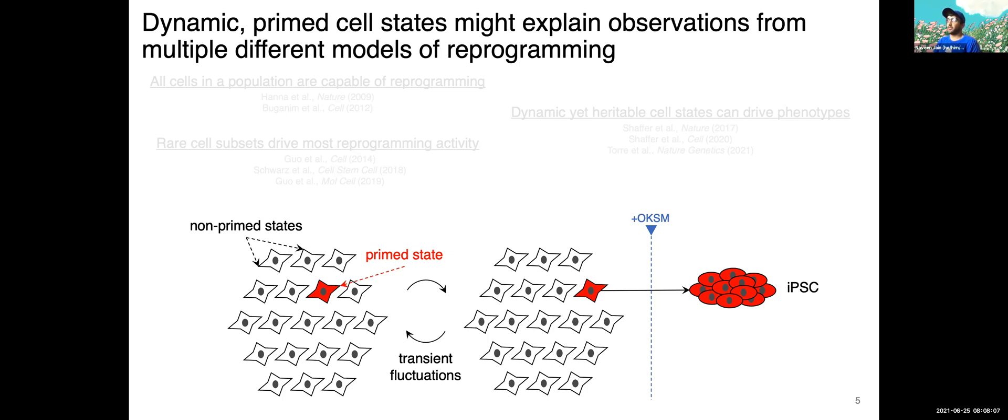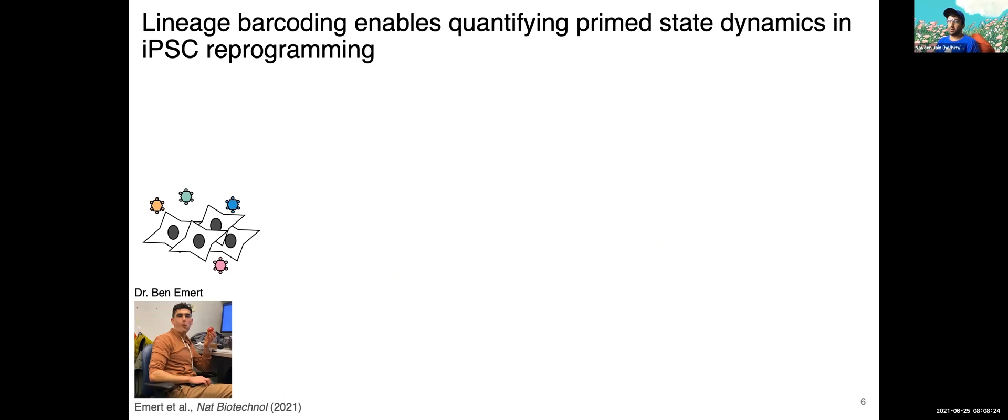With all this in mind, the first questions we wanted to ask was, is there evidence that this state exists, and also, how dynamic is this state? If these transient fluctuations happened on too short of a timescale, it would be impossible to capture or measure this state, even if it did exist. In order to do that, we used a lineage barcoding system developed by a former graduate student in the lab, Dr. Ben Emmert. This barcoding system has barcodes in the three prime UTR of GFP. Really importantly, this means that these barcodes, when you transduce them, exist both as DNA and RNA, which enables us to detect them by a variety of modalities, which I'll get into in a little bit. In addition, we used a human fibroblast system that has a stably integrated OKSM cassette, which allows us to minimize technical noise and induce OKSM by adding doxycycline, which is really convenient for the question that we're studying.